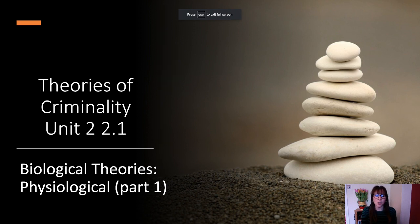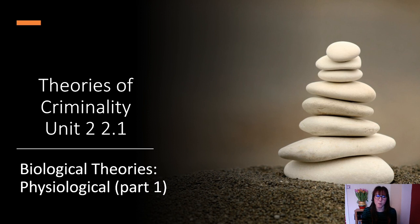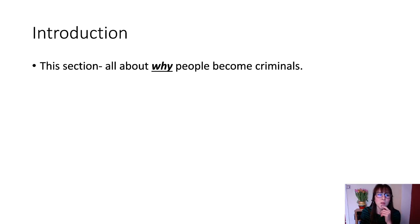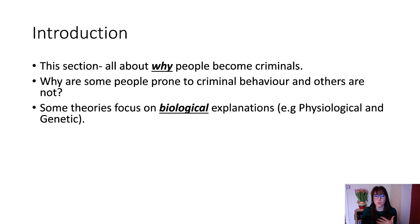Okay, so theories of criminality — Unit 2, Topic 2.1 — these are the biological theories. We're going to start with the physiological. This section is about why people become criminals, why some people are prone to criminal behavior and others are not, looking at biological explanations to do with the body — physiological and genetic.